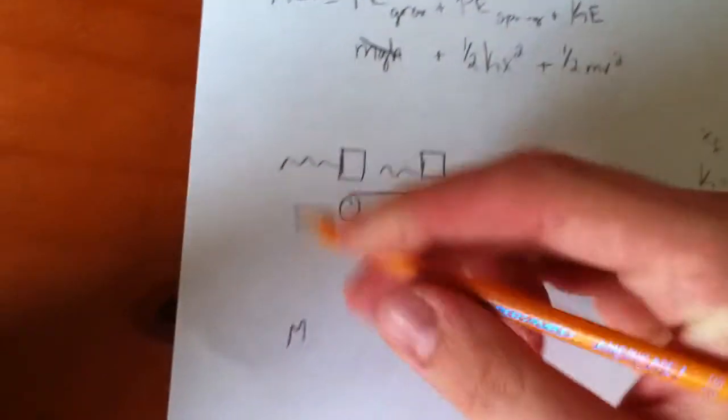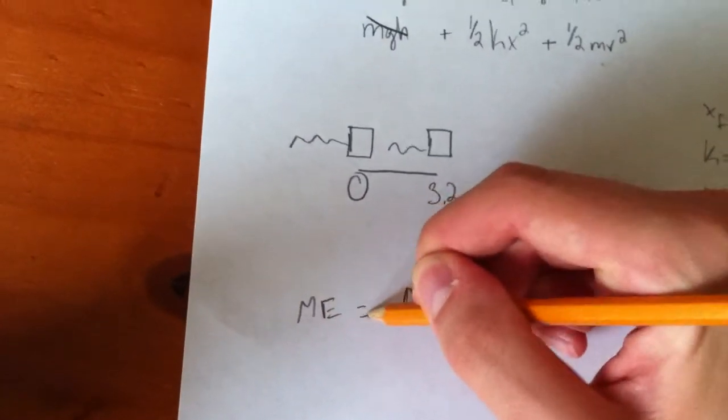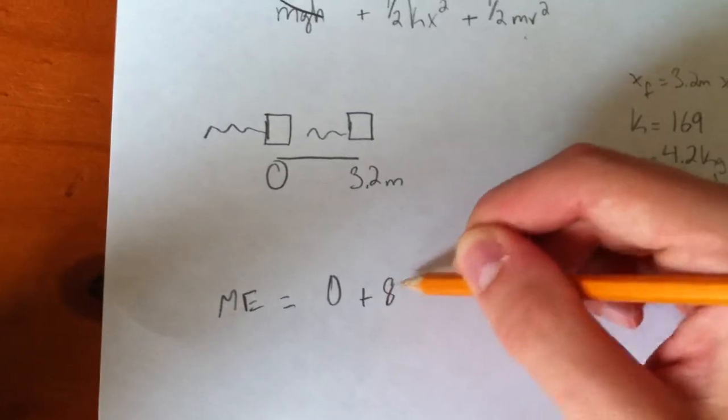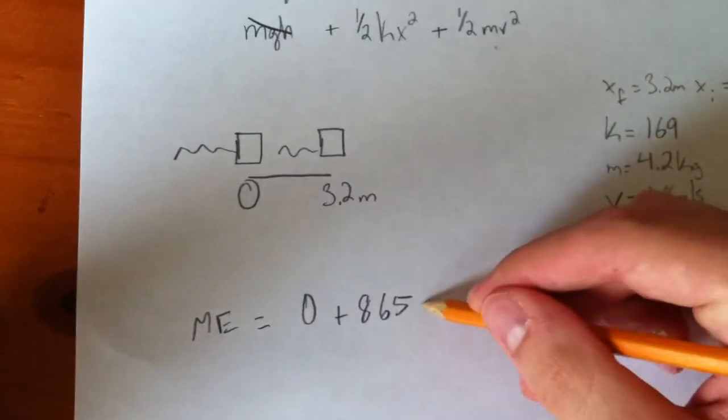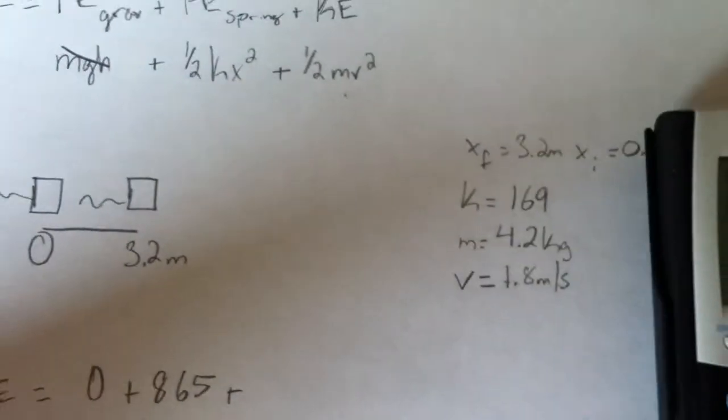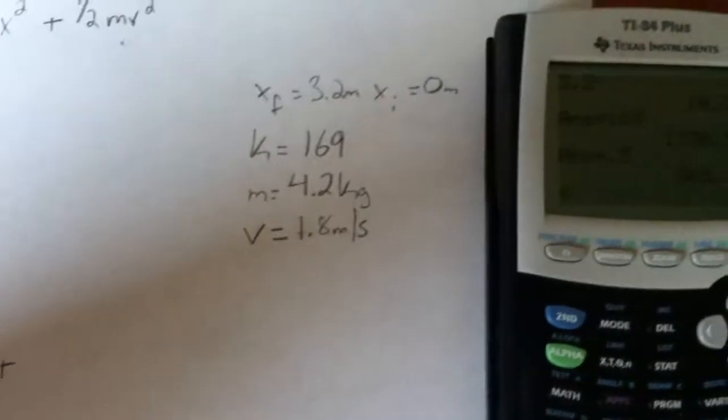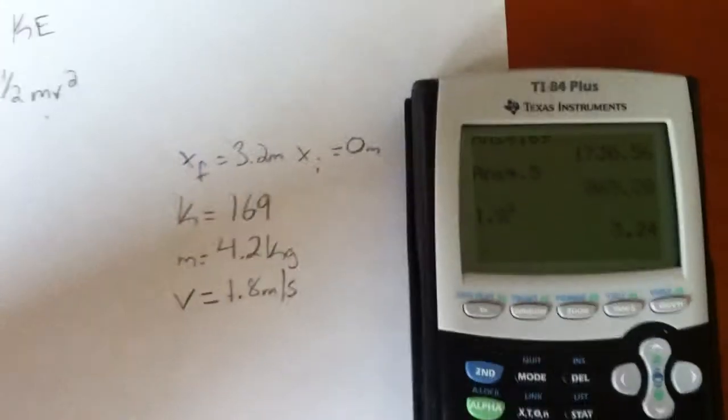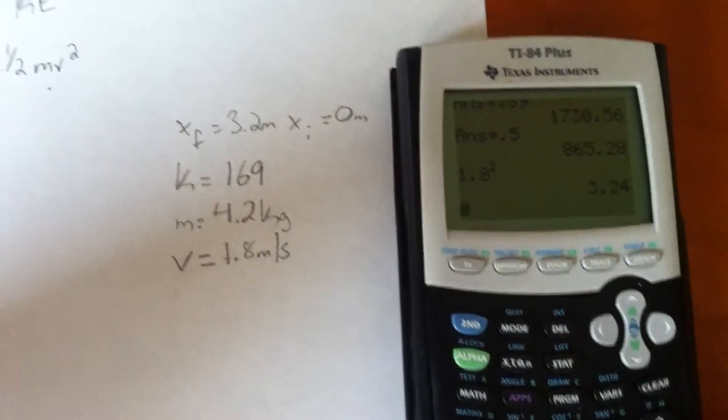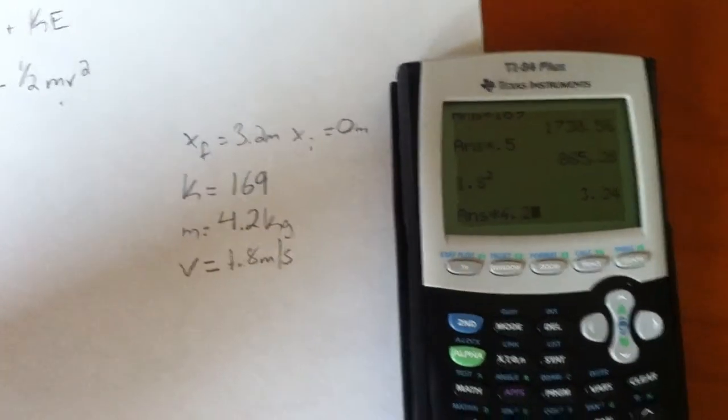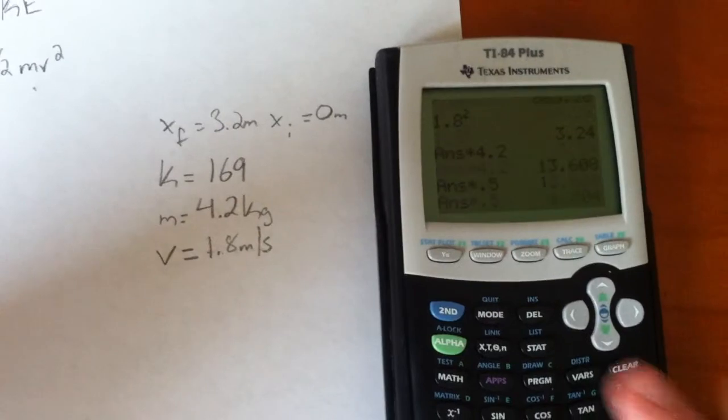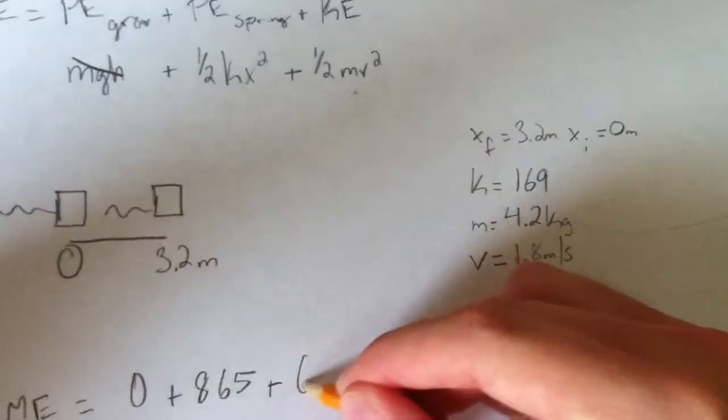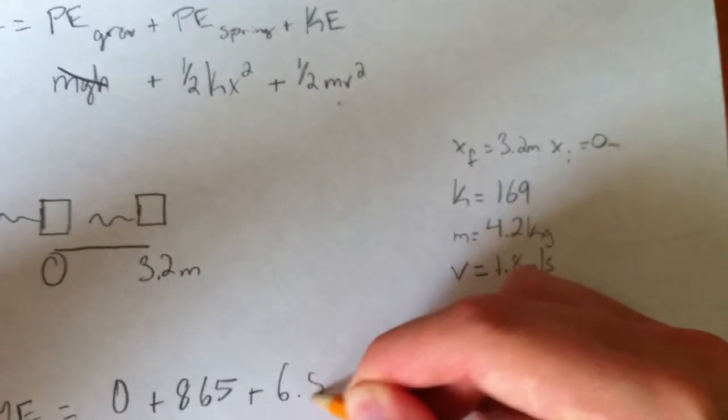So, mechanical energy equals zero plus 865 plus the velocity of 1.8 meters per second. 1.8 squared is 3.24 times 4.2, times 0.5. 6.804. 6.8.